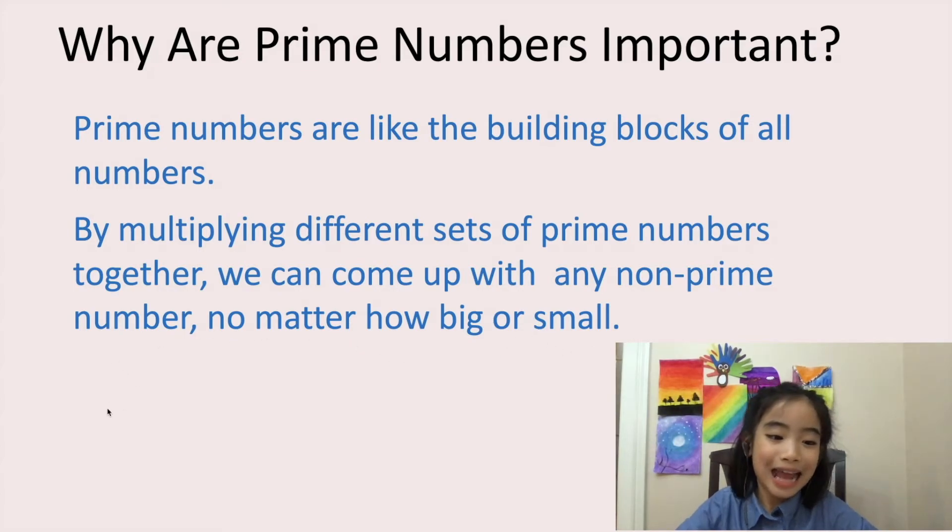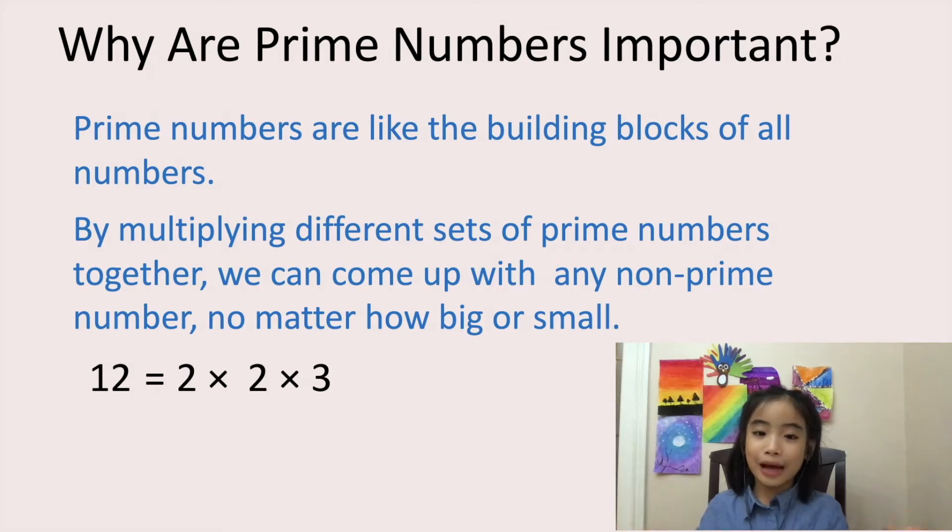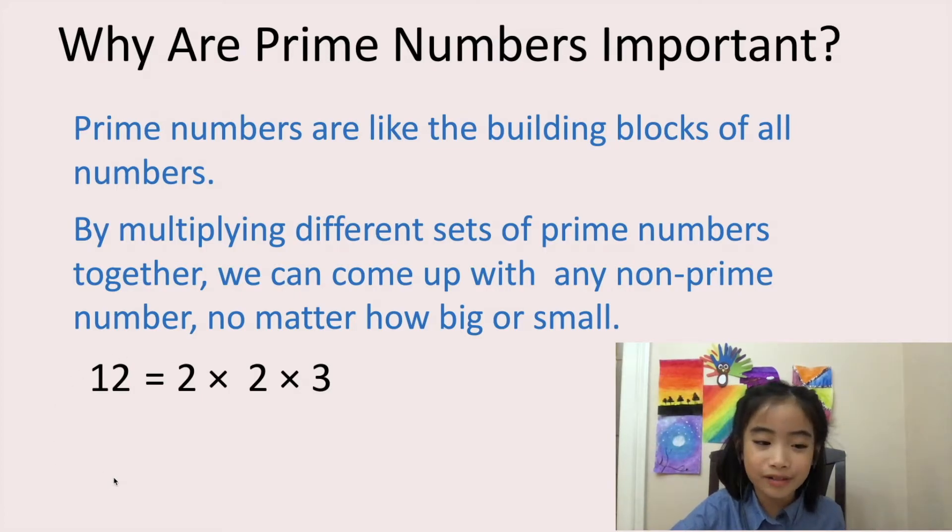So here I have a few examples. So here I have 12. 12 can come up with 2 times 2 times 3. And now here I have another example. It's 54. So 54, we can come up with 2 times 3 times 3 times 3.